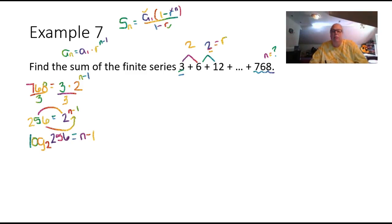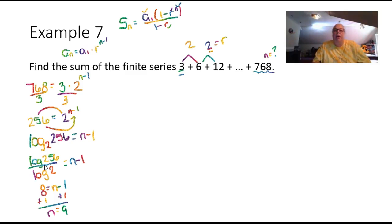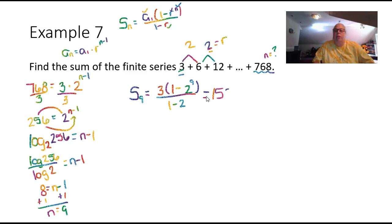Now that we have n equals 9, we can find the sum. The sum of the first 9 terms equals 3 times (1 minus 2 to the 9th power) divided by (1 minus 2), which gives 1,533.